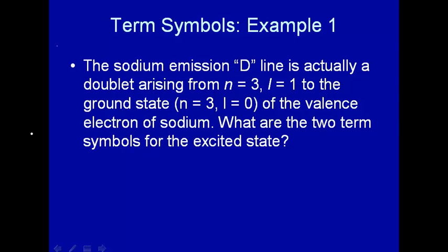Let's do an example to see if we understand term symbols. The sodium emission D-line is actually a doublet arising from n=3, l=1 to the ground state which is n=3, l=0. It's the valence electron of sodium which is giving rise to the emission. What are the two term symbols for the excited state? Let's take a look at this.